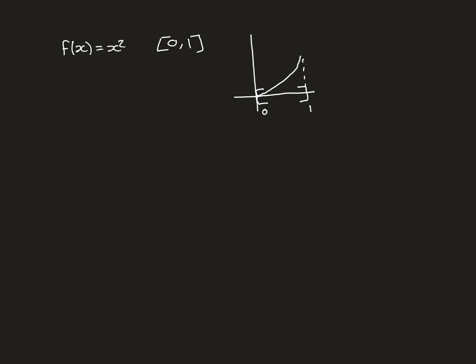Before we do that, let's just cheat — let's use calculus for a moment to actually find what the area under this curve should be, so that we know what answer we're trying to get from our formal definition. If we integrate x squared from 0 to 1, then by the fundamental theorem of calculus, we find the antiderivative of x squared, which is x cubed over 3, and evaluating at 1 and taking away what it is at 0 gives us 1/3. So that's the value of the integral from 0 to 1 of x squared dx.